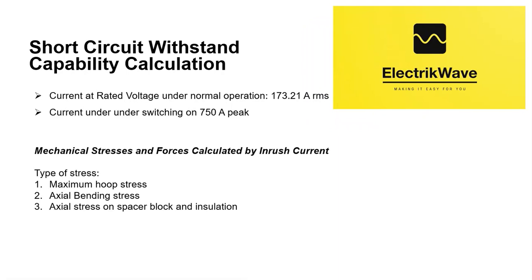Considering 120 MVAR and 400 kV, current under normal operation is 173.21 A RMS. Current under switching on is 750 ampere peak. Type of stress includes maximum hoop stress, axial bending stress, and axial stress on spacer block and insulation. Mechanical stresses and forces calculated by inrush current should not be higher than the considered strength, and there should be adequate margin between design and actual strength.